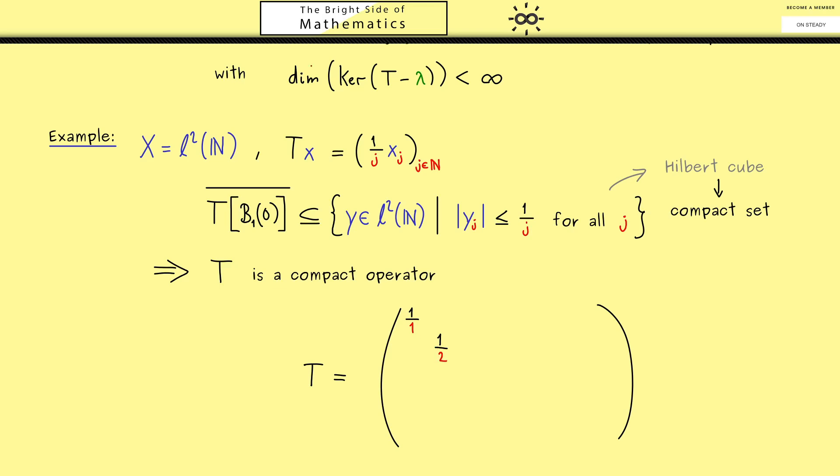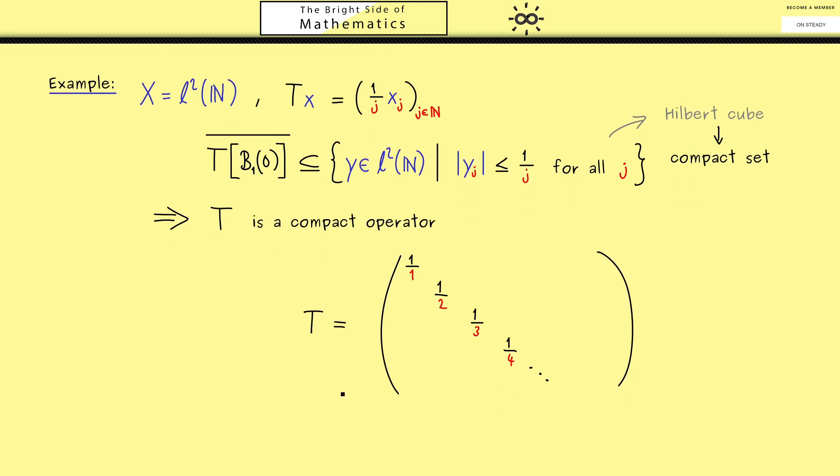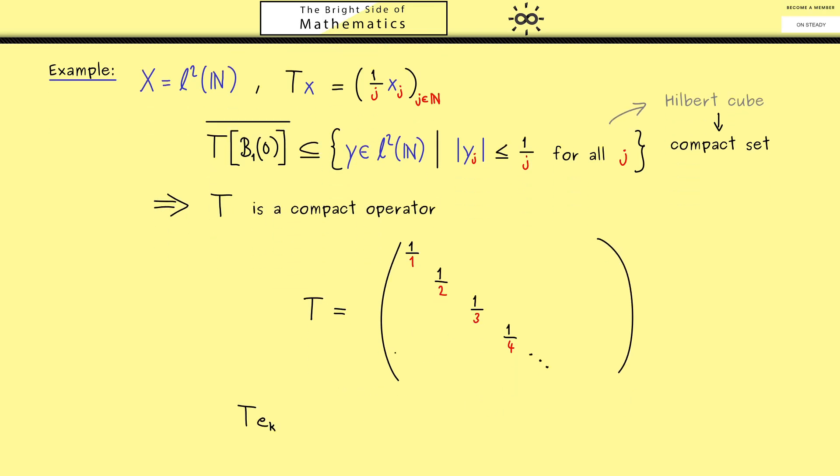then comes 1 over 2, then 1 over 3, 1 over 4 and so on. And then it's not hard to see that all the numbers here on the diagonal are actually eigenvalues. There you can recall that we have done a similar thing in part 29. So this is fine. Indeed we see that e_k is the corresponding eigenvector to the eigenvalue 1 over k.